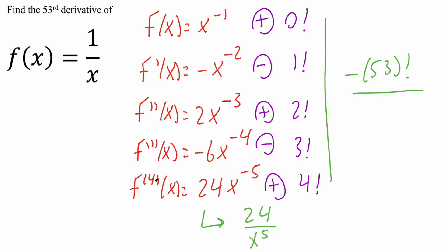So in a way, it's one more. So this is a 4, you have 5. This was a 3, you have 4. This was a 2, you have a 3. And so what we're going to have is x raised to 53 plus 1, which is 54. So this is our final answer to our problem.